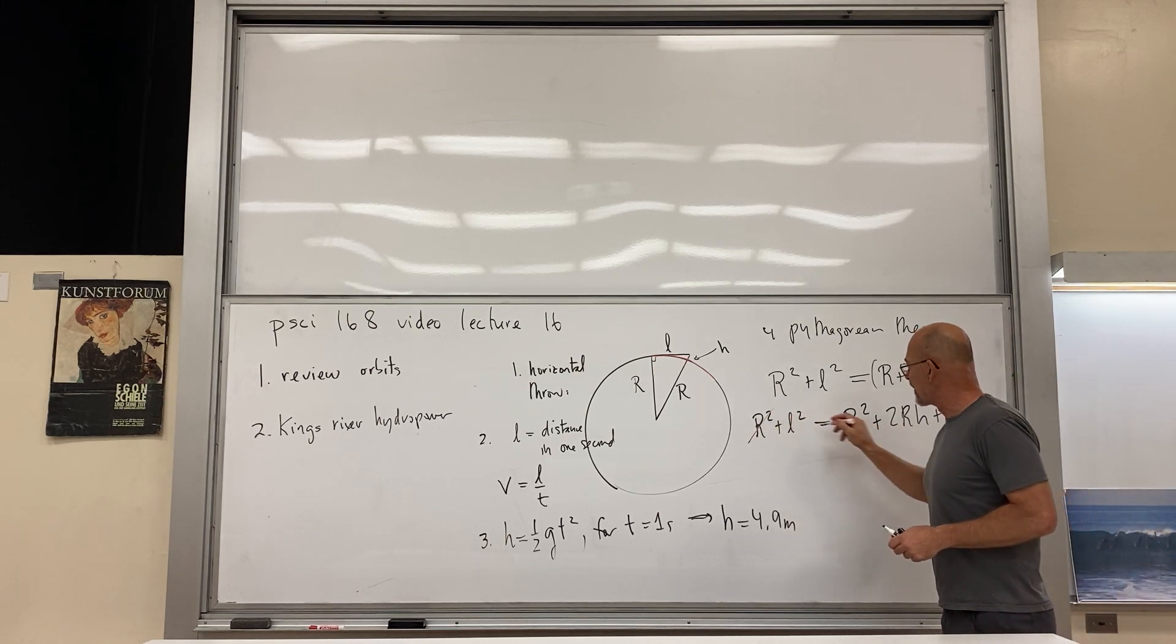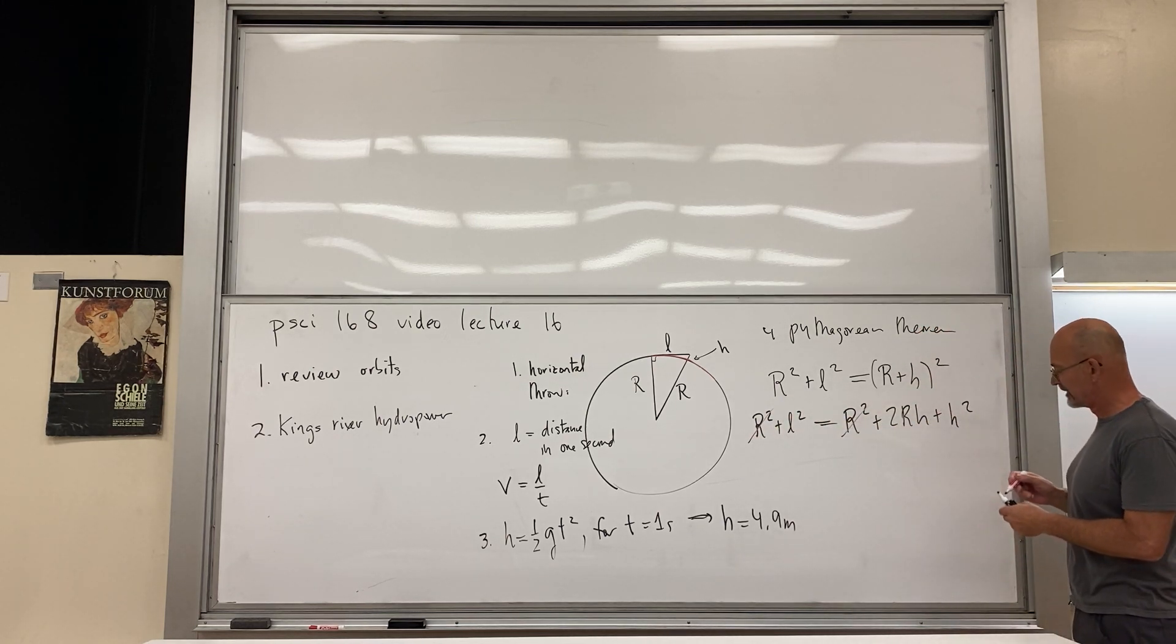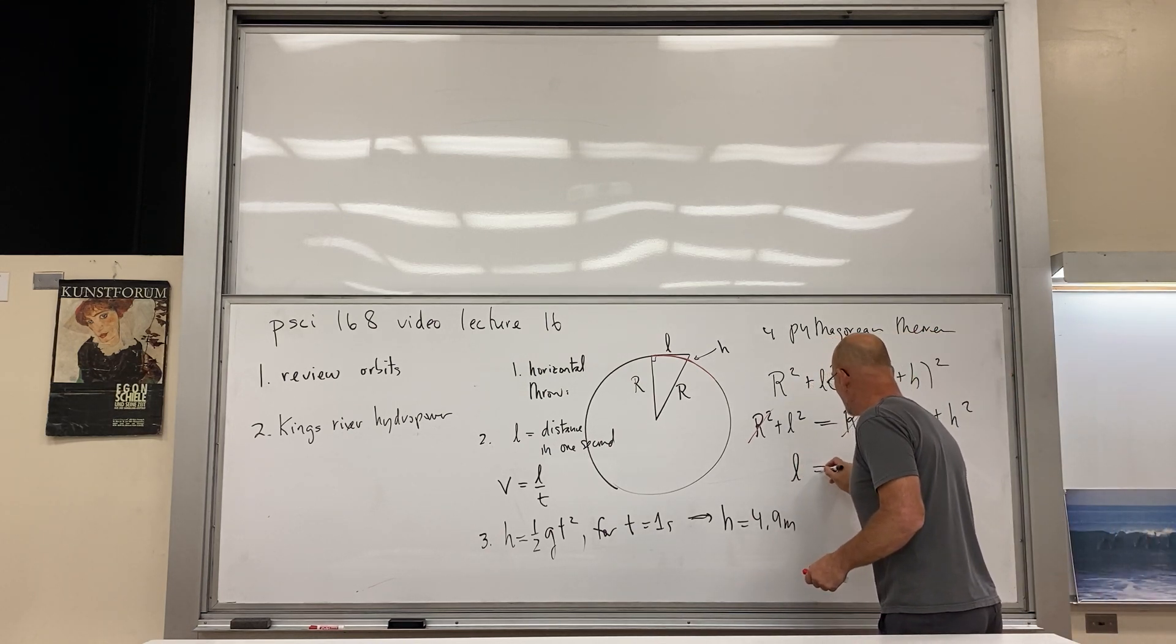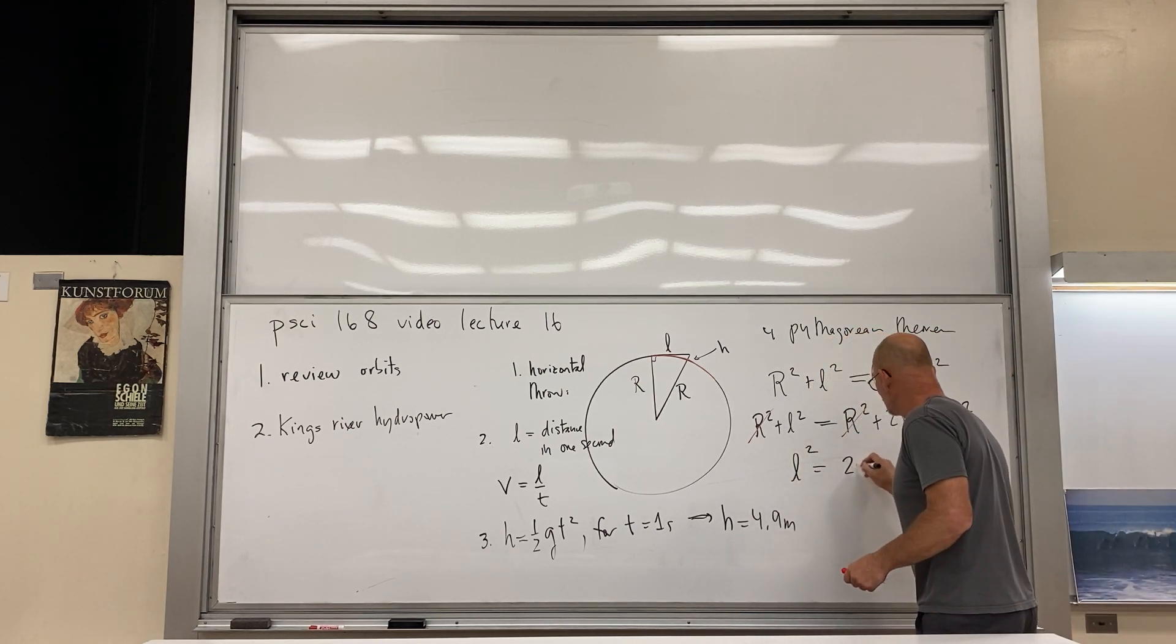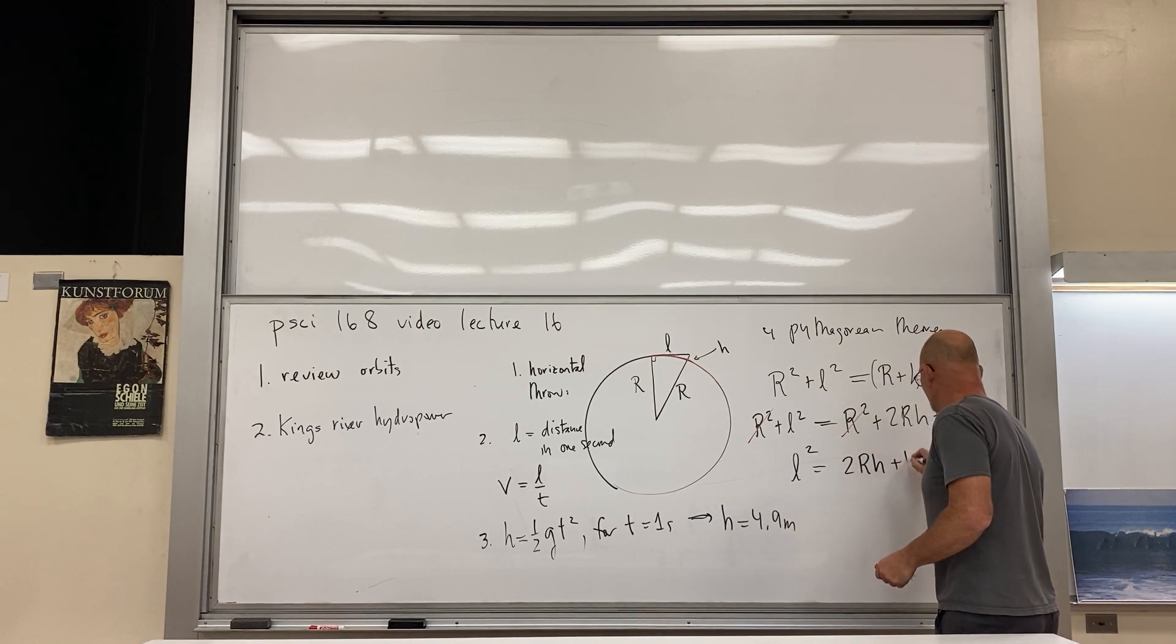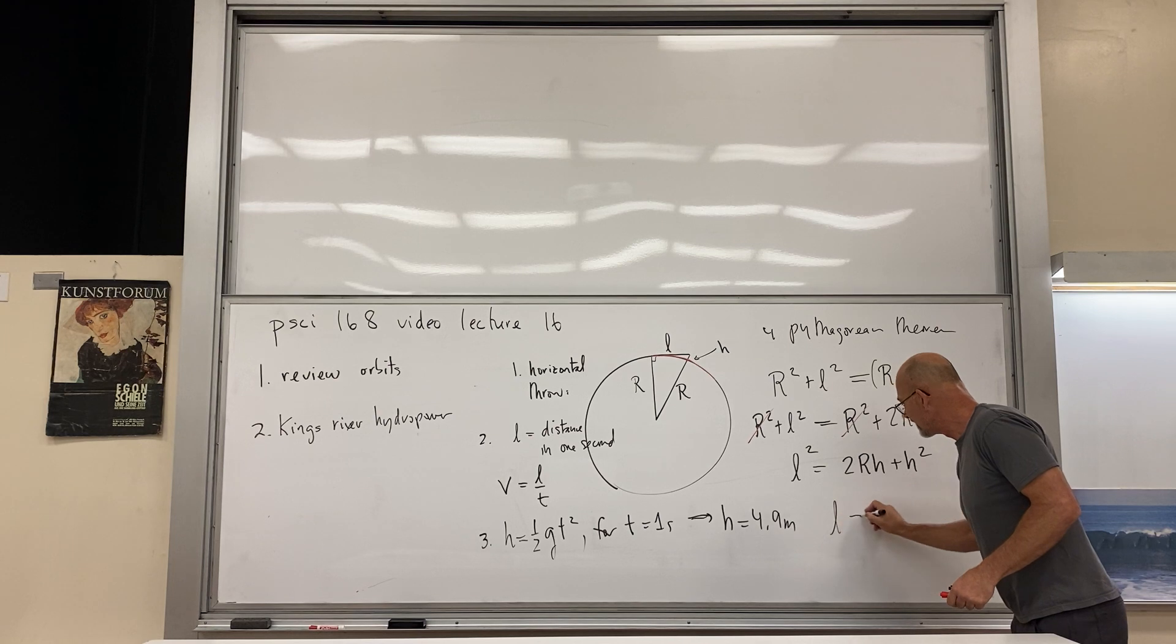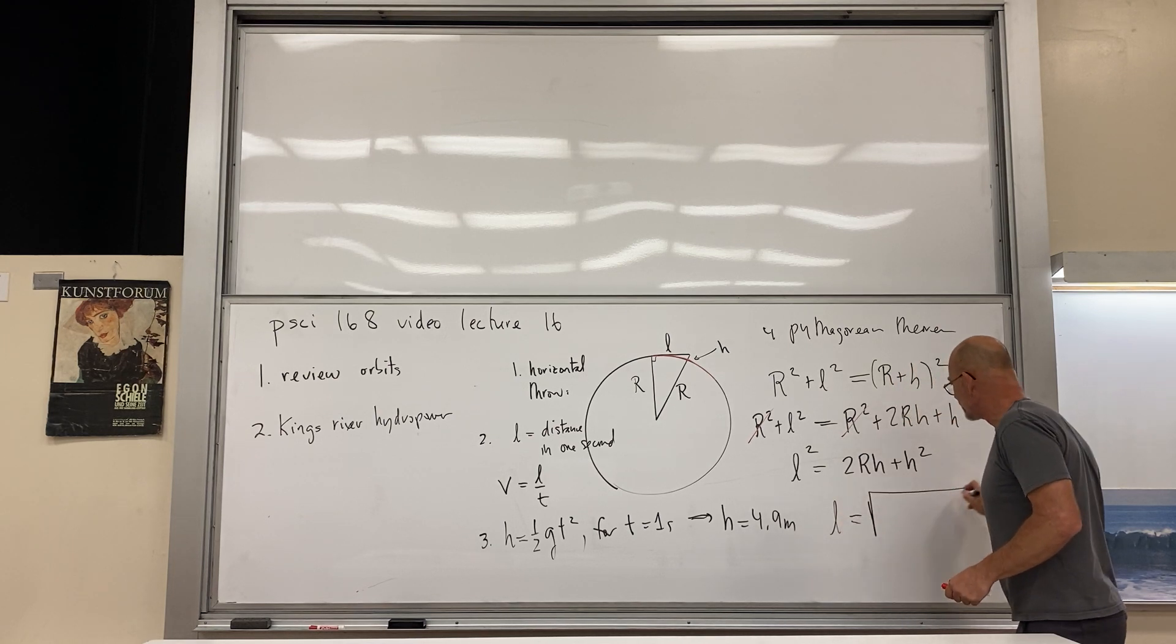The right side, the right side we expand to r squared plus 2rh plus h squared. So far everything is exact. r squared can be dropped from both sides, and then l squared is 2rh plus h squared.